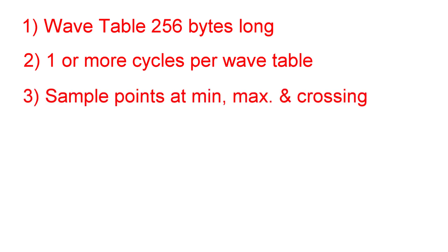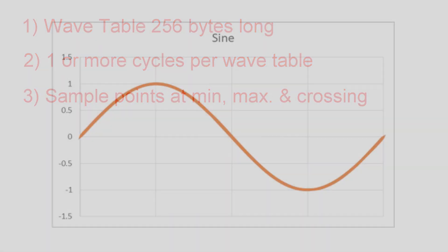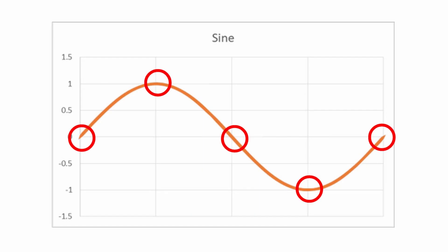1. I set the wavetable length to 256 bytes. 2. One or more wave cycles could be defined in the wavetable. 3. There should be sample points at least at the minimum, maximum, and crossing points for each individual cycle.